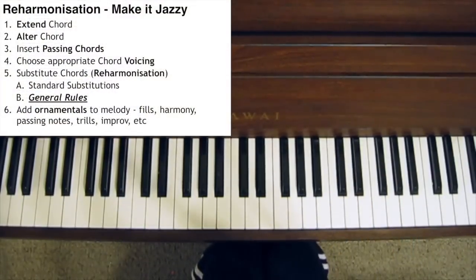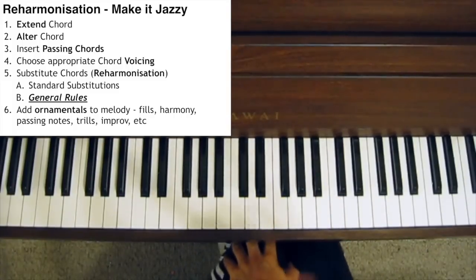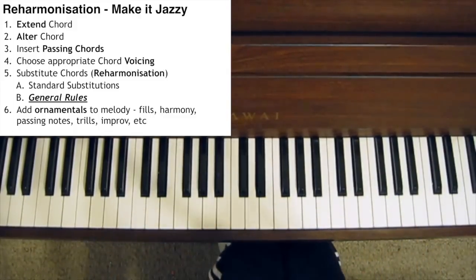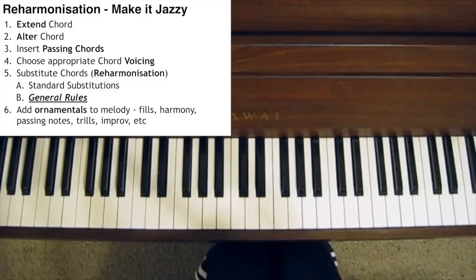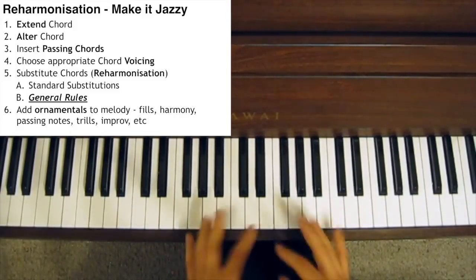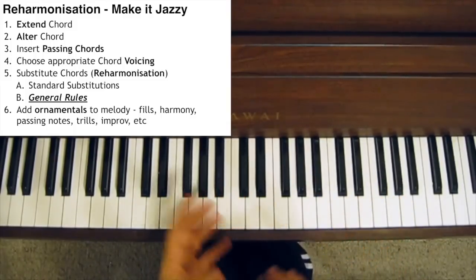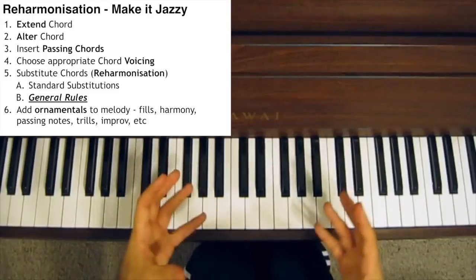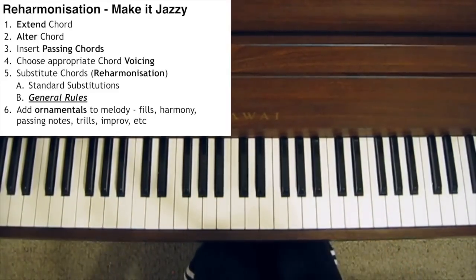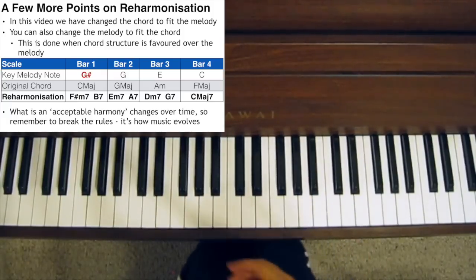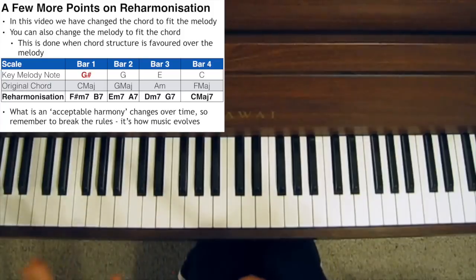You've now reached the end of this lesson — congratulations, and well done for making it this far. This was a bit of a monster lesson. Hopefully I've shown you how you can take any song, whether it's a pop, classical, or country song, and by using extensions, alterations, passing chords, different voicings, reharmonization, and embellishment of the melody, you can create a jazzier version — with different degrees of jazziness, all the way up to the point where the song is almost barely recognizable.